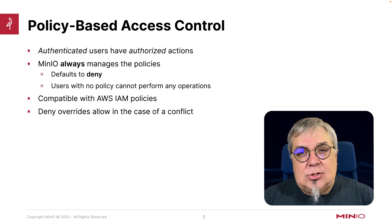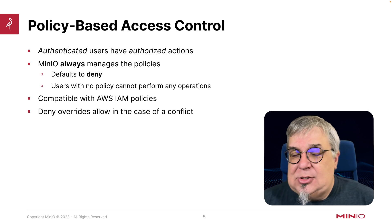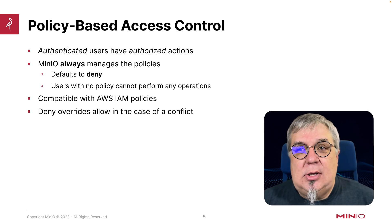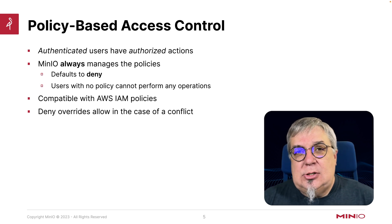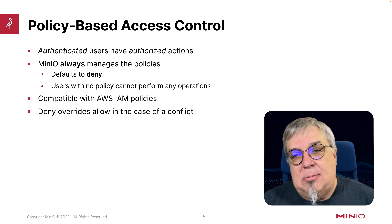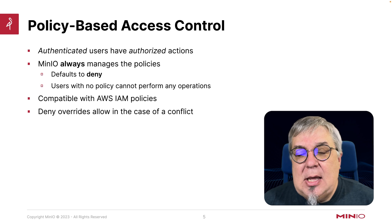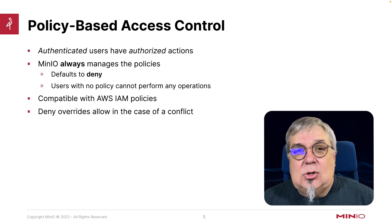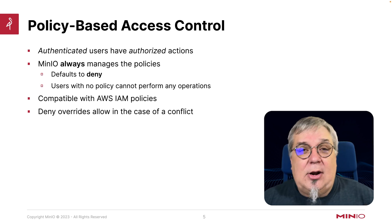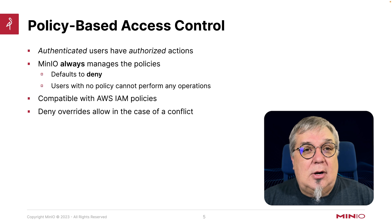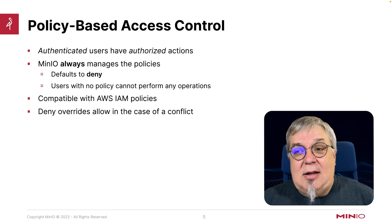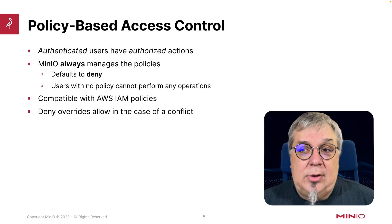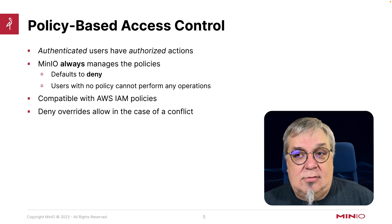MinIO is always going to control the policies. No matter who is doing the authentication, the authorization is always done by MinIO. It's always going to default to a deny. So if I have two rules that are in conflict with one another — let's say I've got a user rule and a group rule — if they are in conflict, then deny is going to override allow.